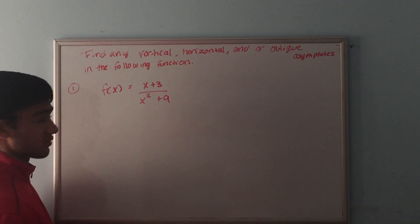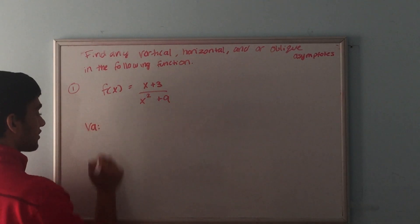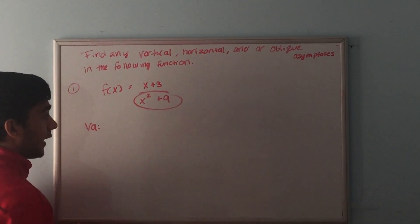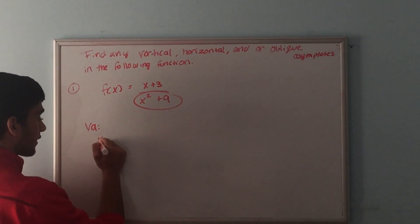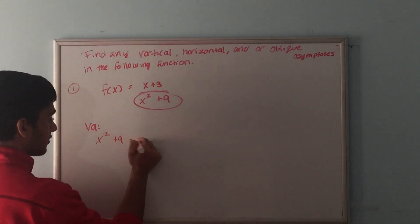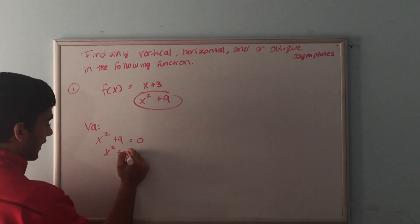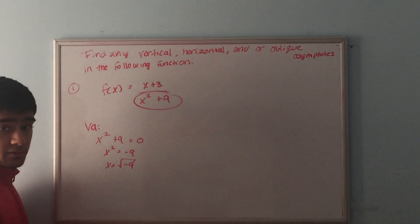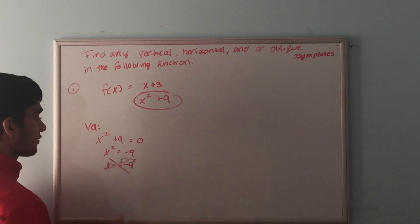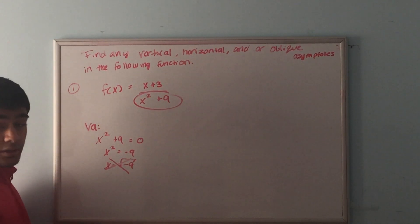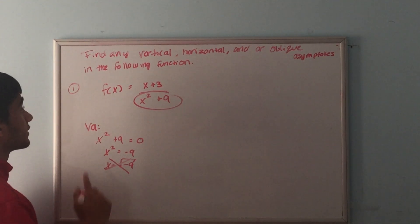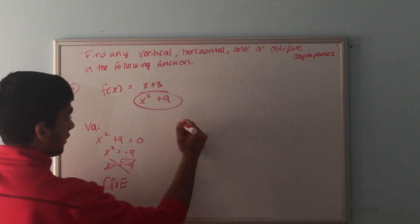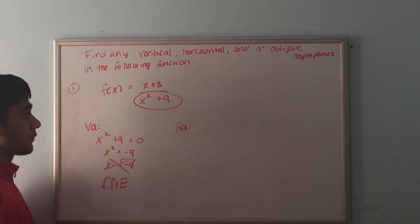Again, let's find the vertical asymptote first. We focus on the denominator and set it equal to 0: x squared plus 9 equals 0, so x squared equals negative 9, and x equals the square root of negative 9. However, we cannot take the square root of a negative number, so the vertical asymptote does not exist for this function.